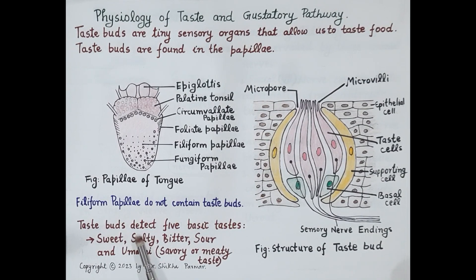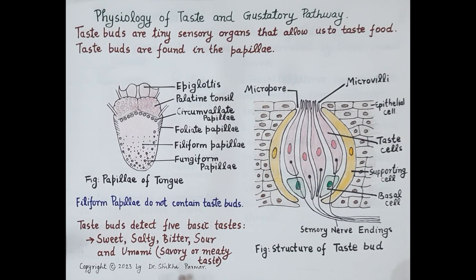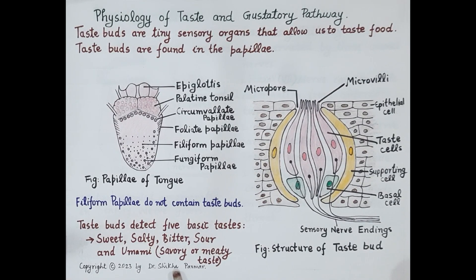The taste buds detect five basic tastes: sweet, salty, bitter, sour, and umami. Umami is the savory or meaty taste found in foods like tomatoes, asparagus, fish, and mushrooms. Whenever food is chewed, it mixes with saliva and the breakdown of food releases chemicals. These chemicals then stimulate the taste buds.